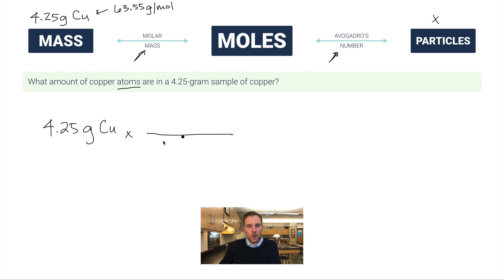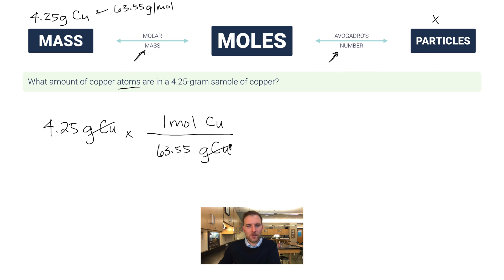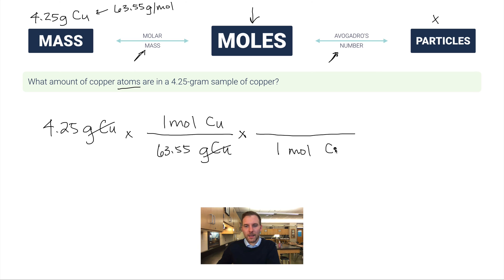Start with 4.25 grams of copper. Multiply by a fraction with 63.55 grams of copper on the bottom and 1 mole of copper on top — this cancels grams. Then multiply by another fraction: 1 mole of copper on the bottom and 6.02 times 10²³ atoms on top. Moles cancel, leaving atoms of copper. We use atoms because copper is a pure element.